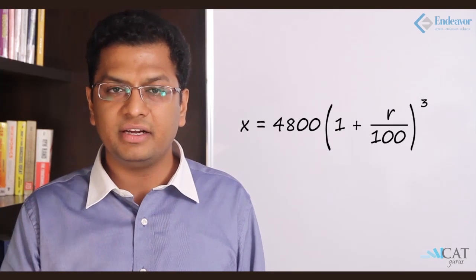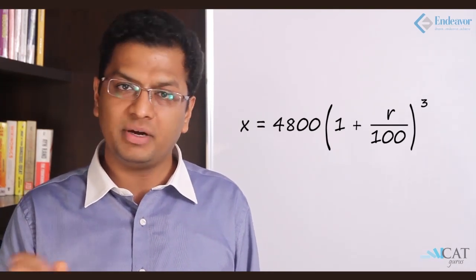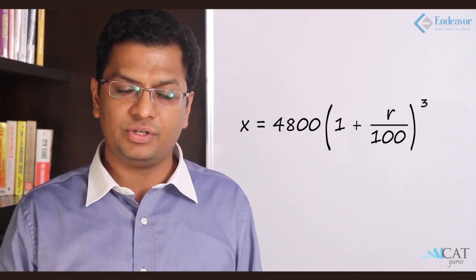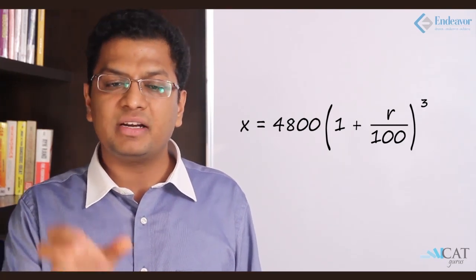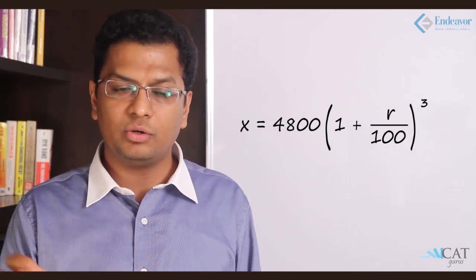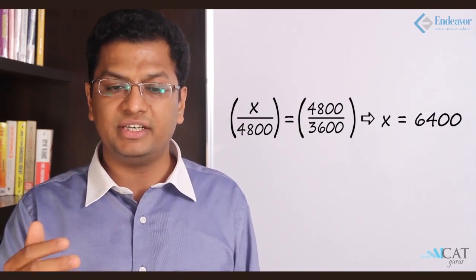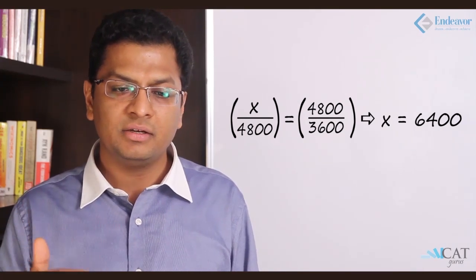To find the population after three more years, we don't need to separately use the rate. Let x be the future population: x = 4800 × (1 + r/100)³. Looking at the first equation, the term (1 + r/100)³ is the same. So x/4800 = 4800/3600, which gives x = 6400. By using this ratio approach, we can combine both equations and find the answer easily.